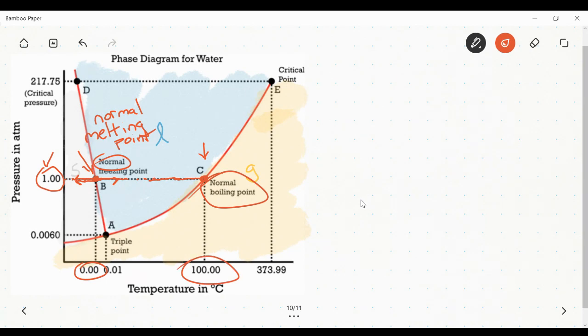But if I happen to be coming from the other direction, point C would take on a different name. We would call it the normal condensation point, because it's a gas condensing back into the liquid phase. There are all sorts of ways that you can get a substance to boil, or to melt, or to freeze. And it's not only dependent on temperature.